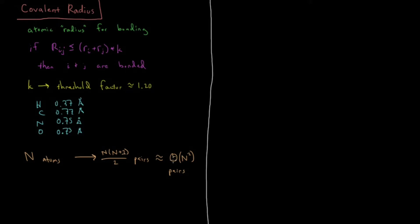If we double the size of the system, we have approximately 4 times as many pairs of atoms to deal with. We have about n squared pairs, but we only have n bonds.